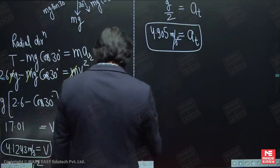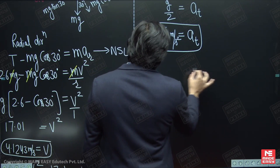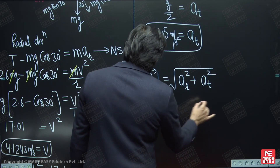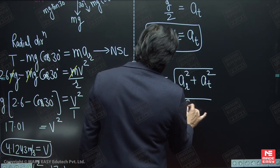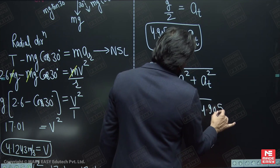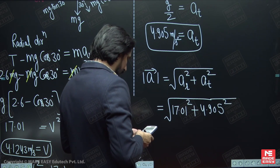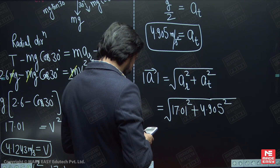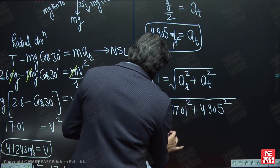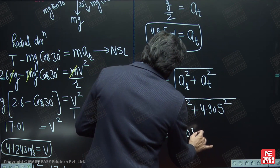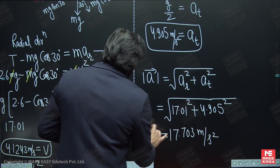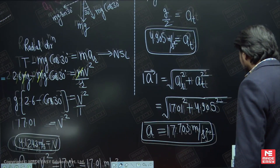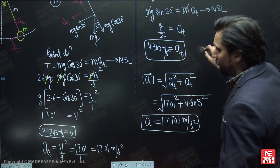Since radial and tangential accelerations are always mutually perpendicular, the resultant acceleration magnitude is: a = √(ar² + at²) = √(17.01² + 4.905²) = 17.703 meters per second squared. So the final answers are: velocity = 4.1243 meters per second and net acceleration = 17.703 meters per second squared at that instant.